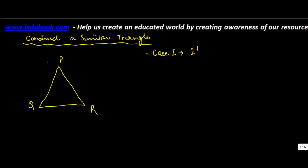Construct a similar triangle. Let's say you have been given a triangle PQR. Let's take case one. The triangle to be constructed is two-thirds of PQR, so basically the triangle to be constructed is smaller than the given triangle.